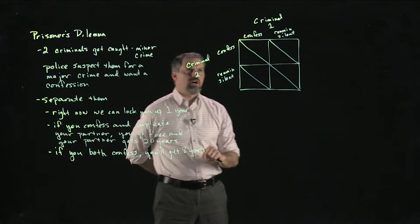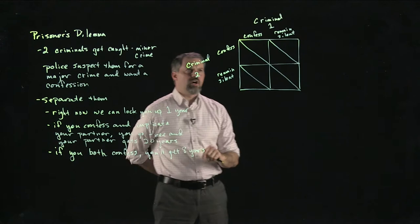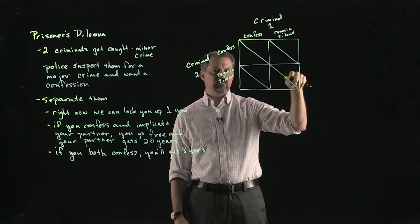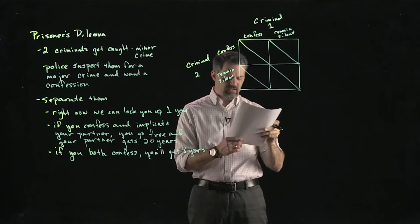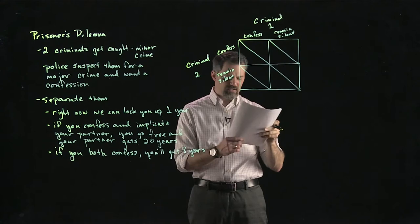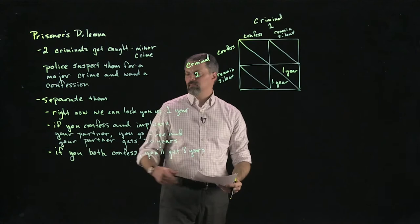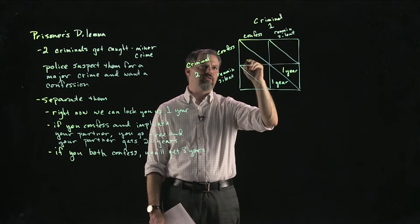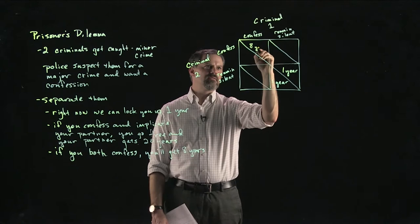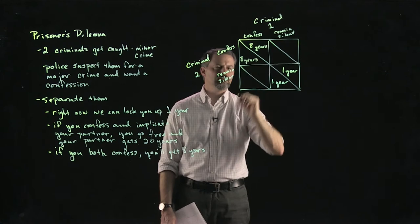If both remain silent, we're in the bottom-right cell — each gets one year. If both confess, we're in the top-left cell — each gets eight years. If Criminal One confesses and Criminal Two remains silent, Criminal One gets zero years and Criminal Two gets 20. If Criminal Two confesses and Criminal One remains silent, Criminal One gets 20 years and Criminal Two gets zero. Now the game matrix is complete.